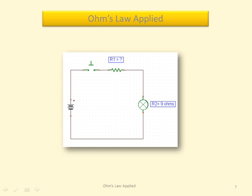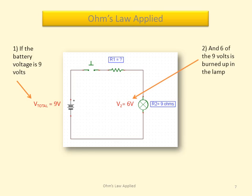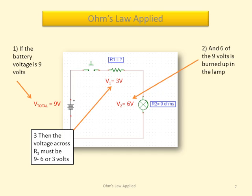We can look at the calculation of V1 from a circuit point of view. If the battery puts out 9 volts, and 6 volts are burned up across the lamp, that leaves 3 volts to be burned up by the resistor.